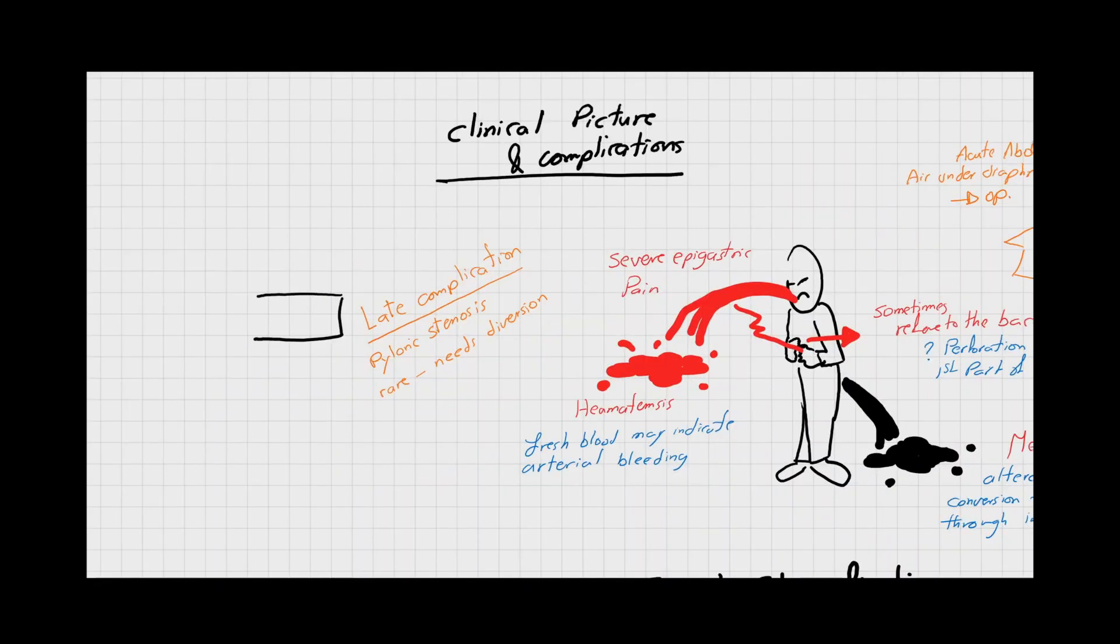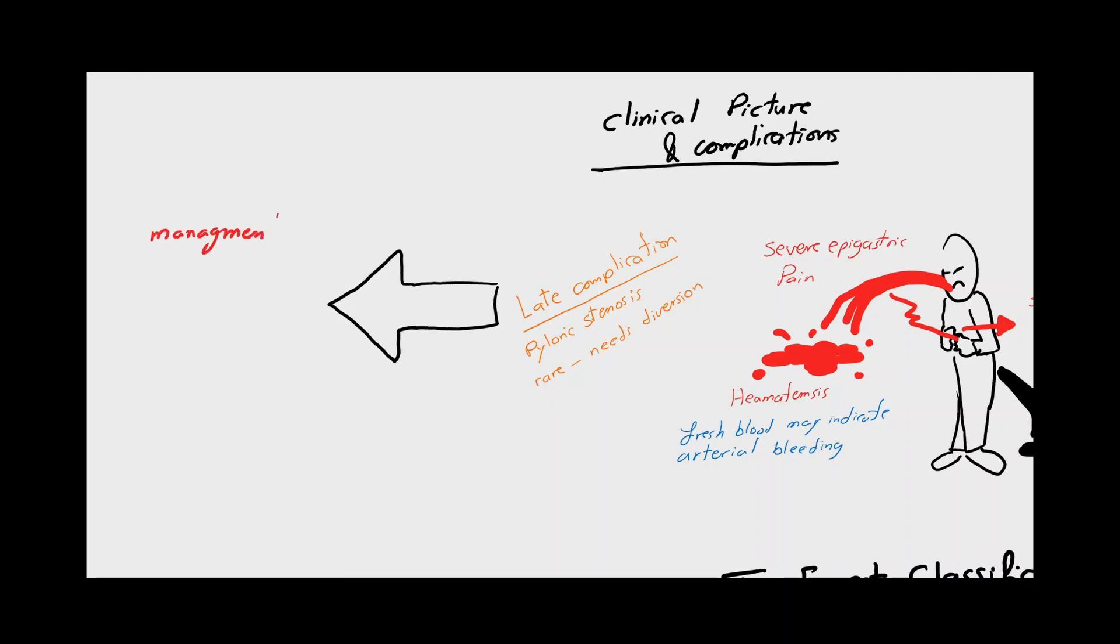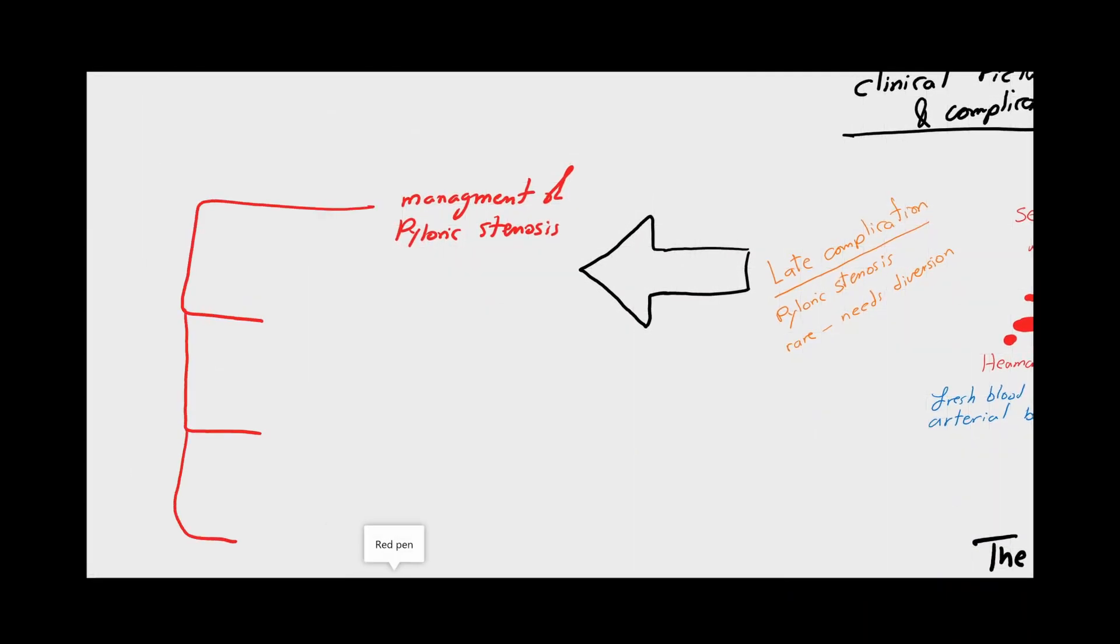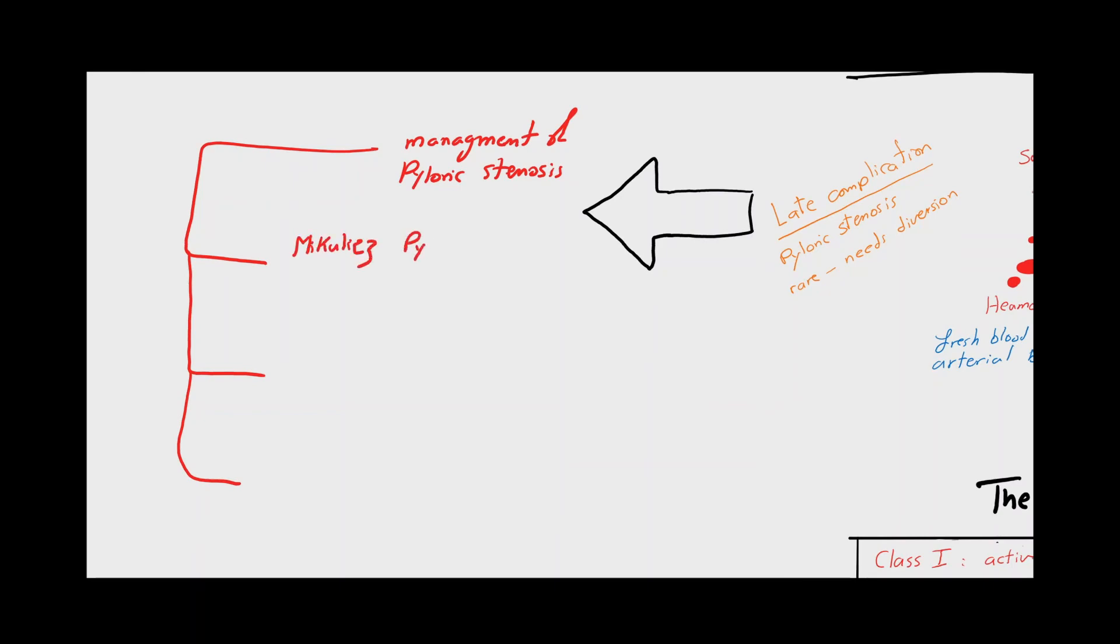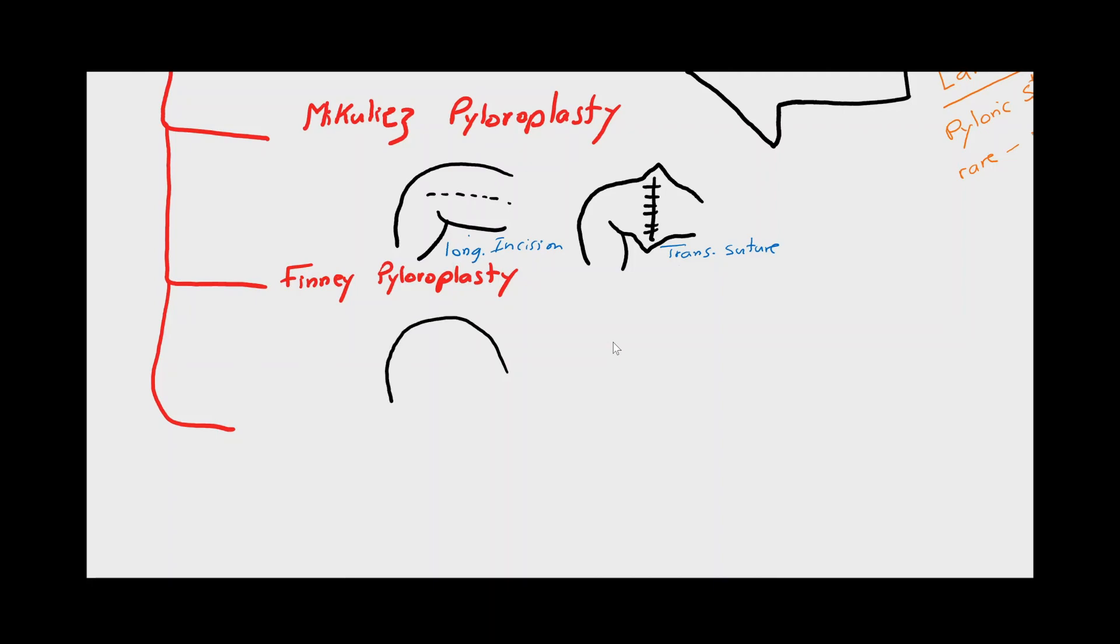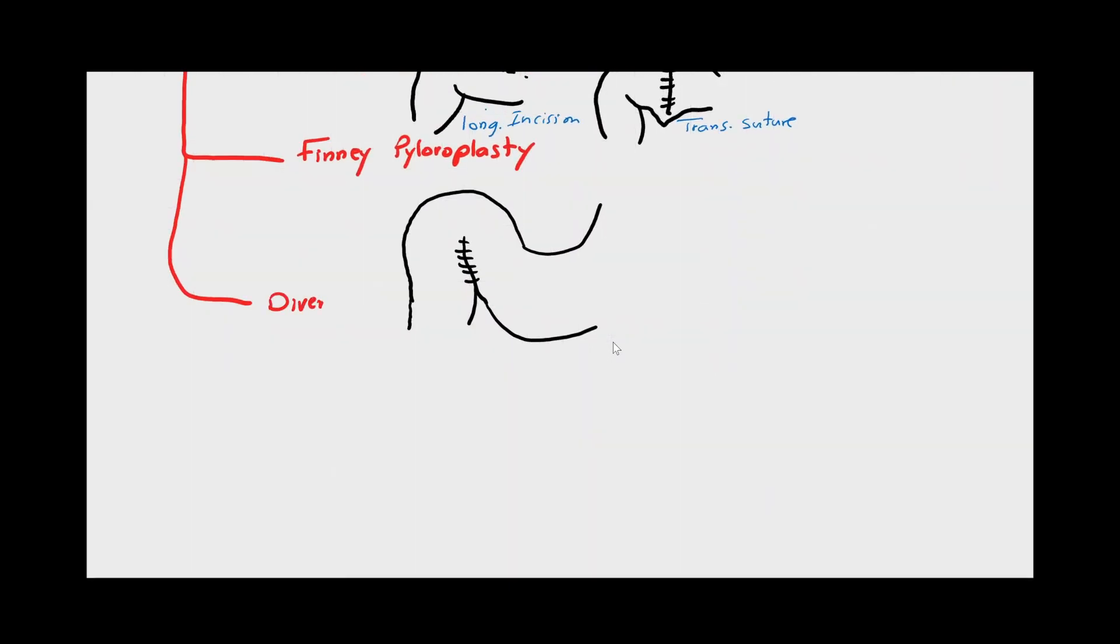The last section of our lesson today is the management of the chronic complications of the peptic ulcer, which is pyloric stenosis. There are three main options to treat pyloric stenosis. The first is a Heineke-Mikulicz pyloroplasty, in which the pyloric muscle fibers are cut longitudinally and then reconstructed or closed transversely, which leads to permanent widening of the pyloric sphincter. The second option is Finney pyloroplasty, in which the pre-pyloric space and the first part of the duodenum are connected together to widen the pyloric opening. And the third and last option is diverting the gastric content through a juxtapyloric posterior wall gastrojejunostomy.